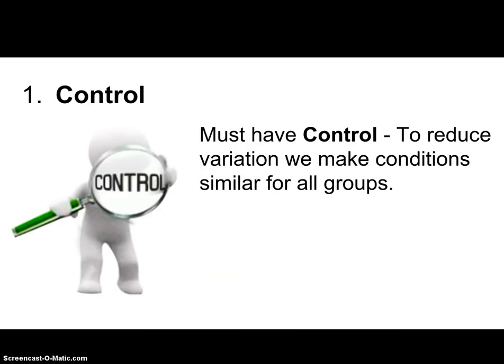So, of an experiment, the first one, ladies and gentlemen, is control. We've got to have control of our experiment. What control means is that we're going to reduce the variation within our experiment by making conditions as close as possible for all the groups that we have. Sometimes we use an actual control group, like a placebo group — we might give a drug to one group and not the other group just to see if the drug is even effective. That's a form of control.